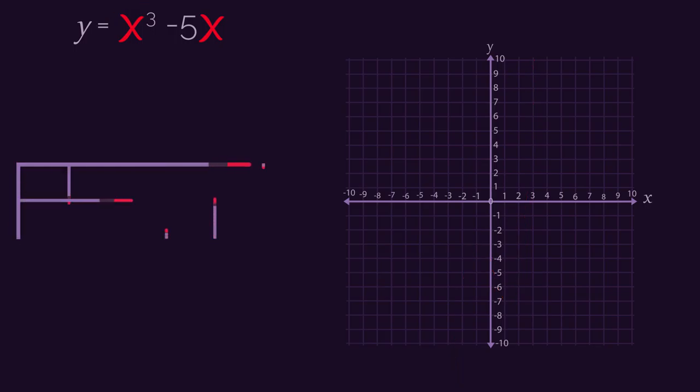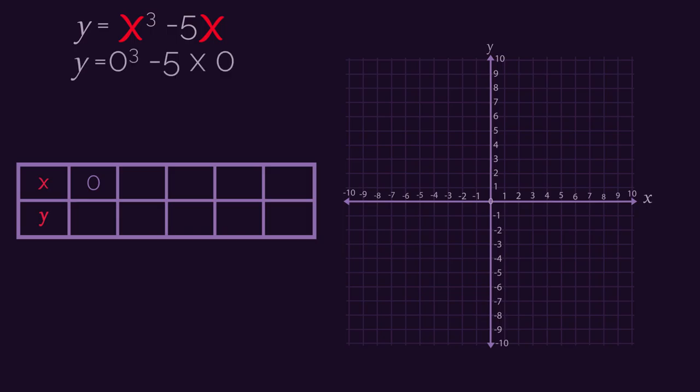So we start with our table of values, and we will need at least 5 sets of coordinates for cubics. I always start with 0, so let's substitute that into the equation. y equals 0 cubed minus 5 multiplied by 0. So y equals 0 minus 0, which means y is 0. So when x is 0, y is 0. Enter these coordinates into the table.